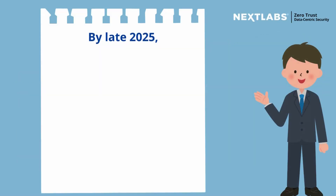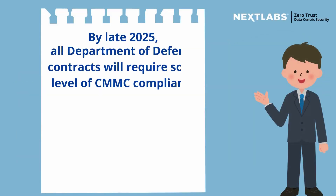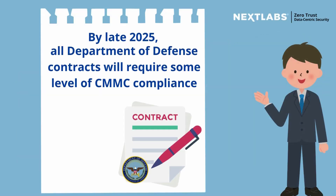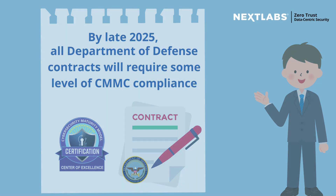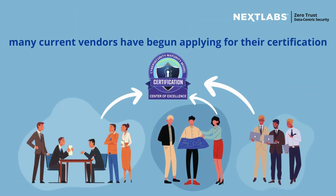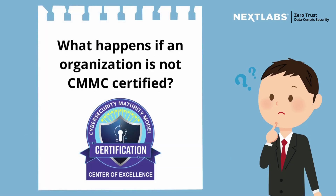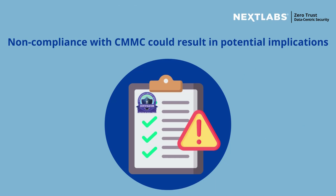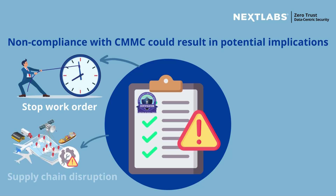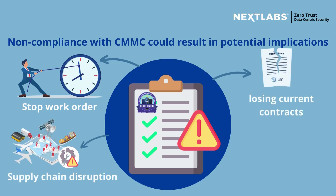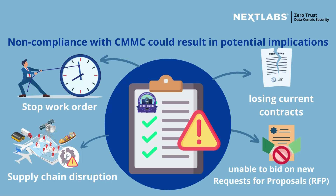By late 2025, all Department of Defence contracts will require some level of CMMC compliance. Many current vendors have begun applying for their certification. So what happens if an organisation is not CMMC certified? Non-compliance with CMMC could result in potential implications, including stop work order, supply chain disruption, losing current contracts, and being unable to bid on new requests for proposals.